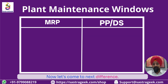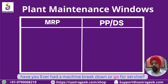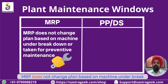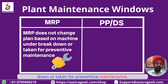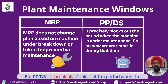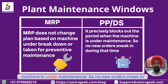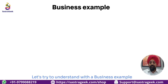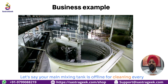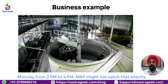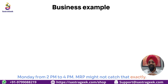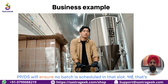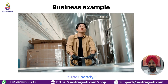Have you ever had a machine breakdown or go for service? MRP does not change the plan based on a machine under breakdown or taken for preventive maintenance. But PPDS precisely blocks out the period when the machine is under maintenance, so no new orders sneak in during that time. For example, if your main mixing tank is offline for cleaning every Monday from 2pm to 4pm, MRP might not catch that exactly, but PPDS will ensure no batch is scheduled in that slot. That's super handy.